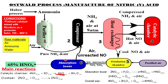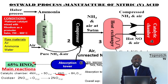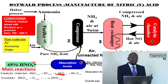Then we go to the absorption tower. In the absorption tower, water is added. The nitrogen dioxide reacts with water to form nitrous acid (HNO₂) and nitric acid (HNO₃). The nitrous acid is further oxidized by oxygen to get nitric acid (HNO₃) because it is very unstable. The overall equation: nitrogen dioxide plus water plus oxygen gives nitric acid (HNO₃). The nitric acid obtained can be packaged for transportation and storage. The nitric acid obtained in this process is 65% pure and is given the state symbol aqueous.